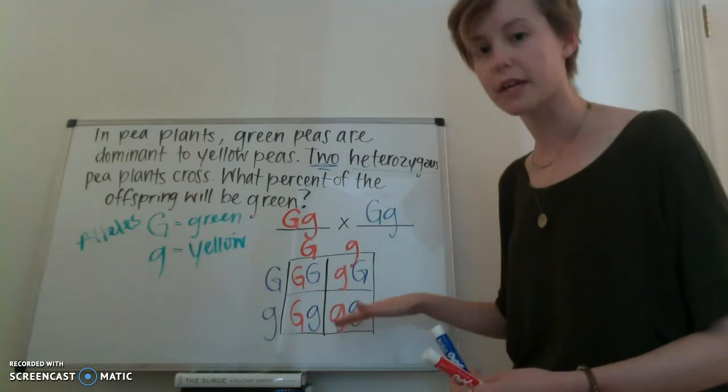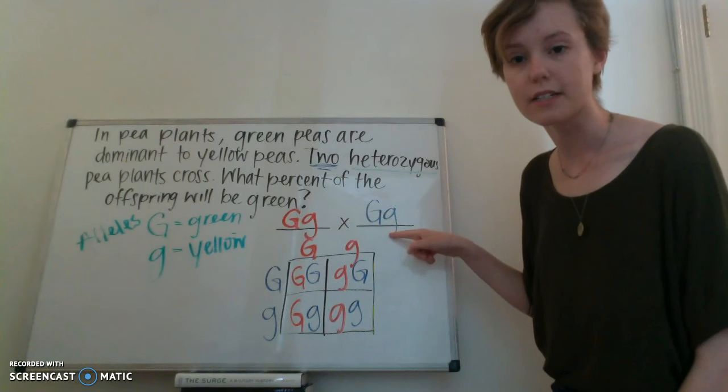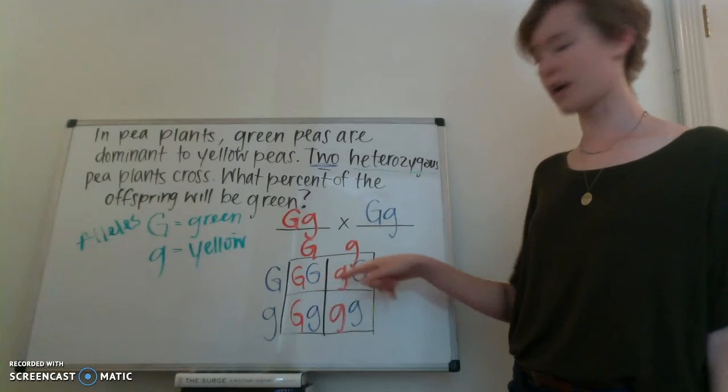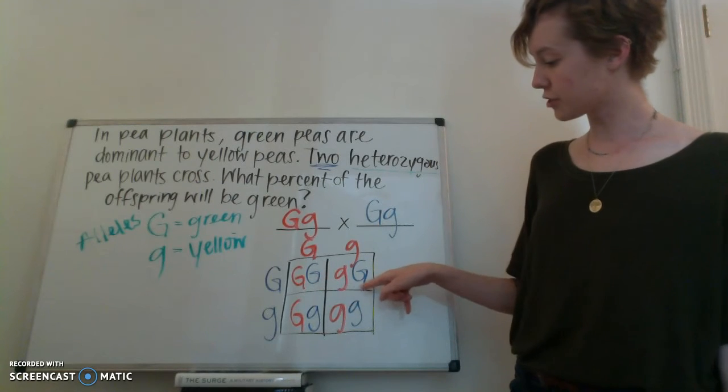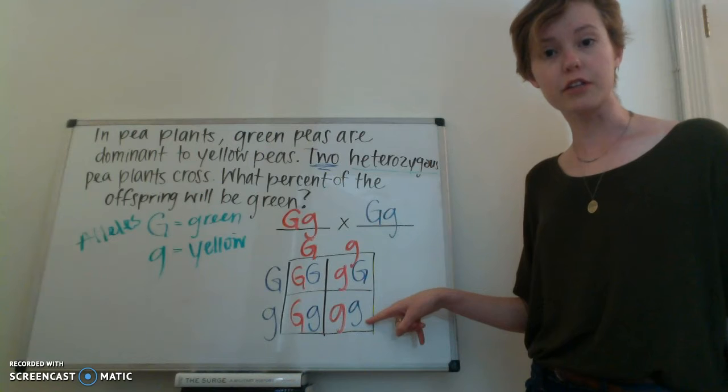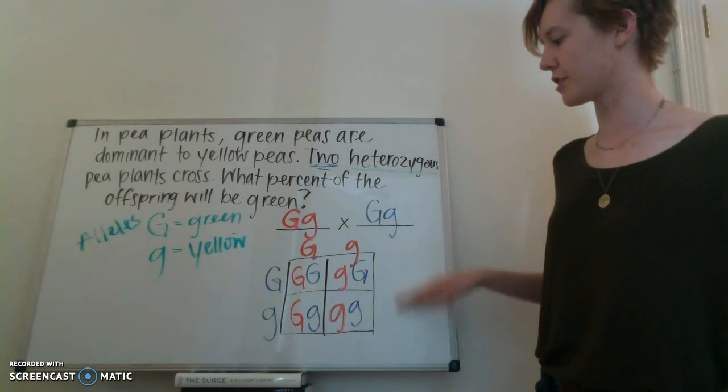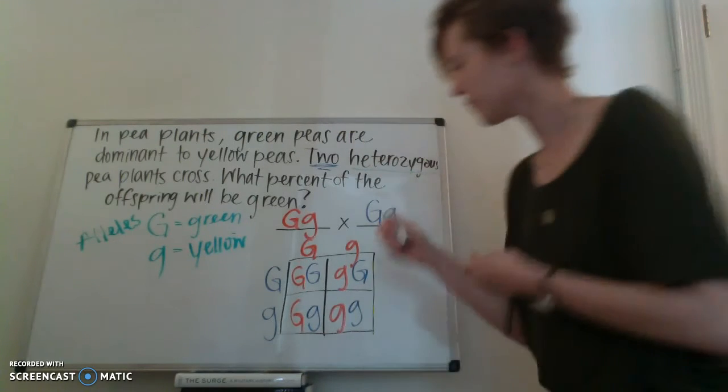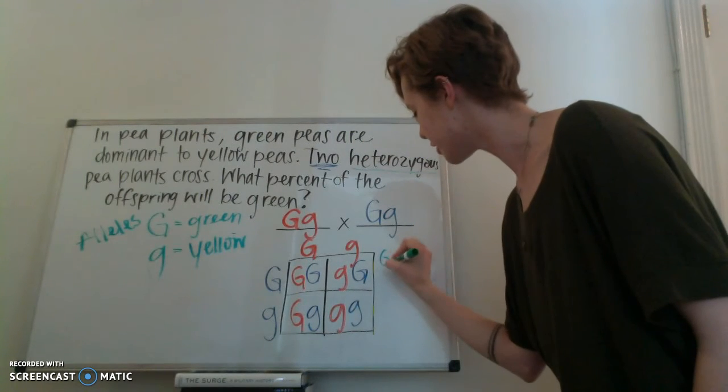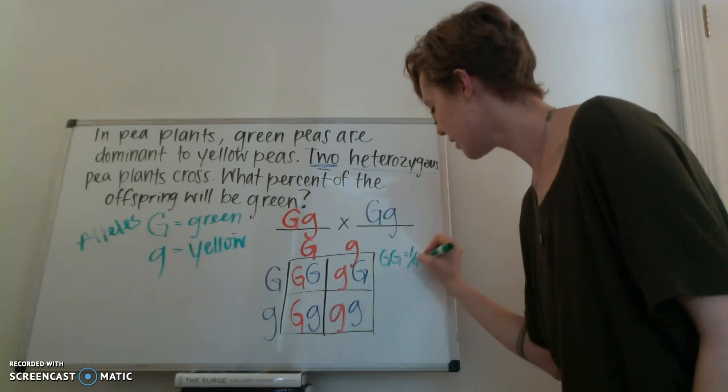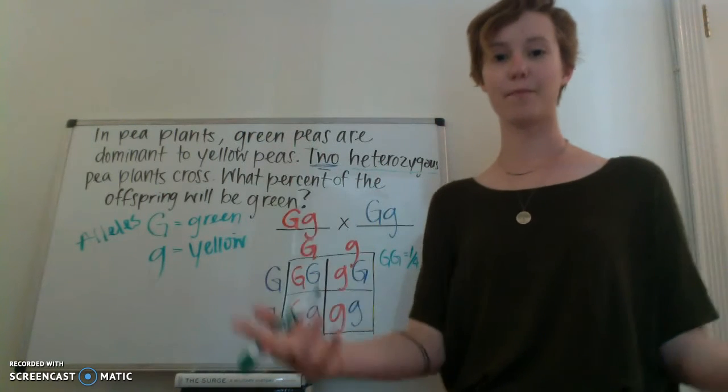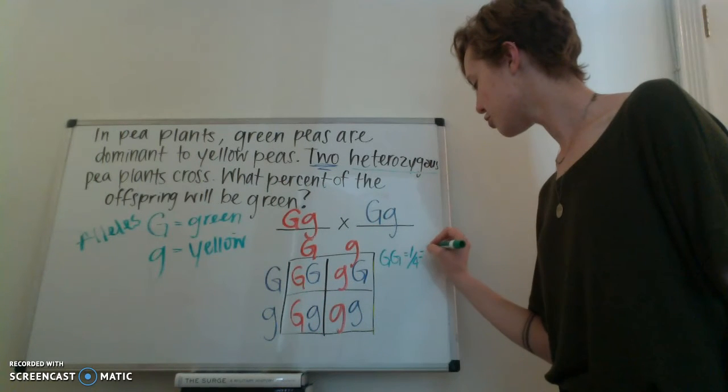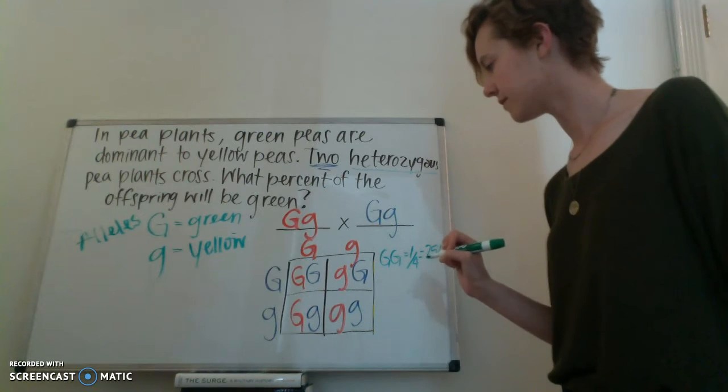So here's what this box means. This box means that if these two parents had four little baby pea plants, they would have these genotypes. Big G, big G. Big G, little g. Big G, little g. And little g, little g. So let's actually write this information out to the side here. So I'm going to switch back to a green marker. So, for big G, big G, I have one out of four baby pea plants have that big G, big G genotype. So that's 25%, one out of four.